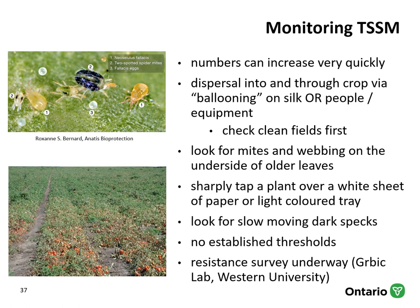It's very important when monitoring to check your clean fields first — this applies to two-spotted spider mite and other insects and diseases. For two-spotted spider mite, look for mites and webbing on the underside of older leaves. You can also use tapping trays or white sheets — place them down and tap the plant to see if spider mites fall out; you're looking for slow-moving dark specks. We don't really have any thresholds established in Ontario. There is a survey underway to look at resistance in this pest, being run by a group at Western University. If interested in finding out more, please contact OMAFRA.